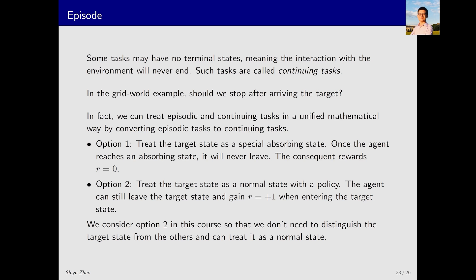Some tasks may have no terminal states, meaning the interaction with the environment will never end. Such tasks are called continuing tasks. What kind of tasks are these? In the real world, it's difficult to find tasks that go on forever. However, for tasks that last a significantly long time, we approximate them as continuing tasks. In our grid world example, after reaching the target, should we stop there or should the policy continue to be executed, keeping it at S9 indefinitely?